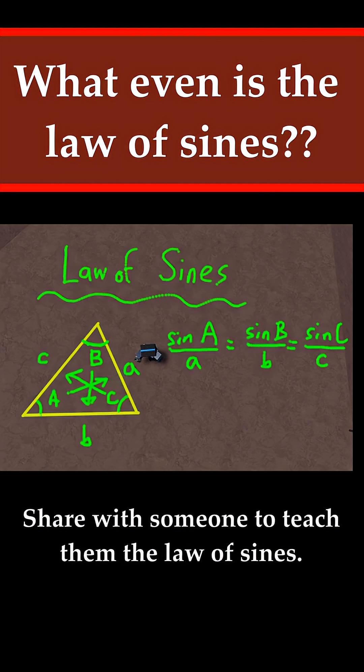So basically all the law of sines says is that if you take the sine of an angle and divide it by the opposite side, that constant is going to be the same for every single side and angle that you do this with.